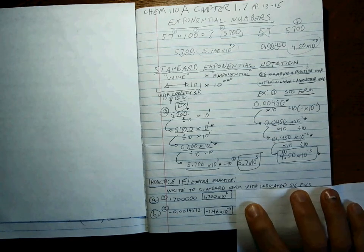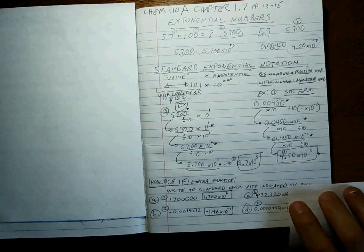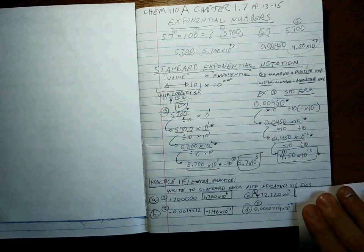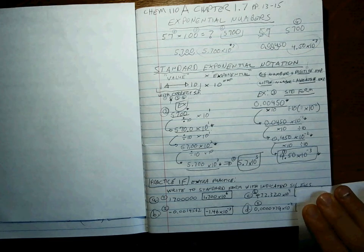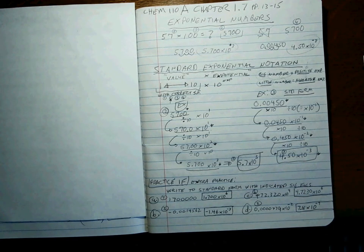Let's try the two other practice problems. Take these two numbers: 472.320 times 10 to the fourth, and 0.0000779 times 10 to the minus 2, and write those numbers to standard exponential notation. Hit pause and give it your best shot. Okay, you're back — you did your best, you wrote down your answer, let's see if you're actually right. Those are the correct answers for C and for D. That's your practice. Hopefully you're doing well. Go to your teacher if you're having troubles. See you next time.